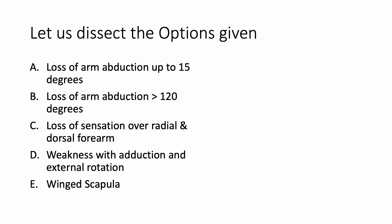Now let us dissect the options. Option A states loss of arm abduction up to 15 degrees. Which muscle does that? That is supraspinatus, and the nerve supply for supraspinatus is the suprascapular nerve. But we are looking for the axillary nerve, so let's look at option B.